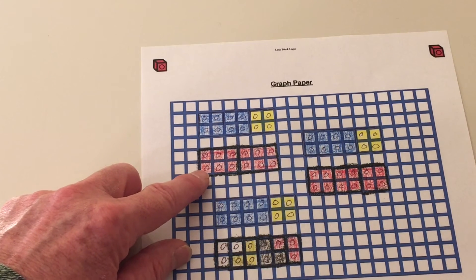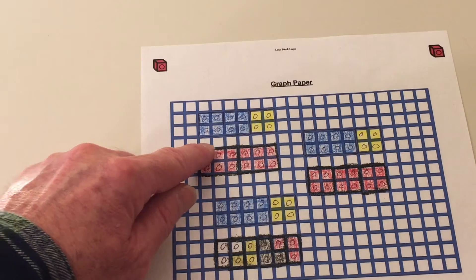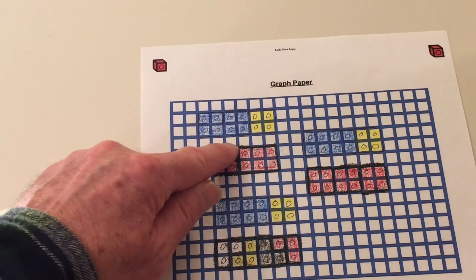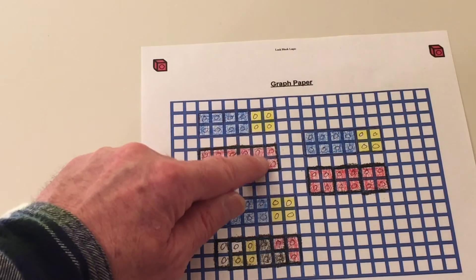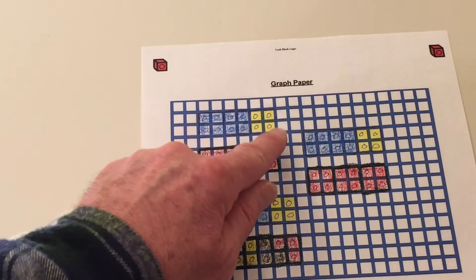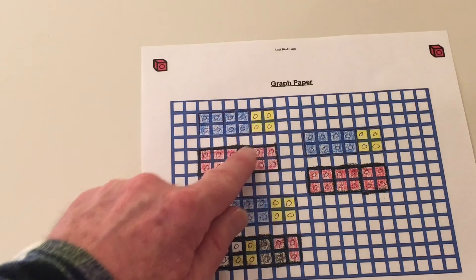Then we did with the 6-dot blocks. Here's a 6-dot block, and here's one. 1, 2, 3, 4, 5, 6. 1, 2, 3, 4, 5, 6. There are 2 6-dot blocks that equal 12.